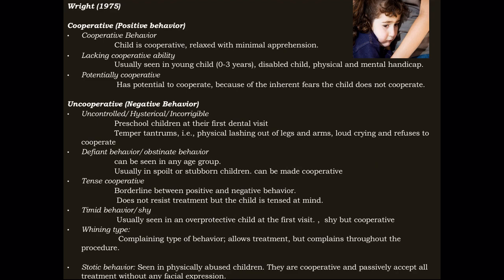Next is Wright's classification, given in 1975. Wright divided behavior into two types: positive behavior as cooperative, and negative as uncooperative. Cooperative behavior was further divided into cooperative, lacking cooperative ability, and potentially cooperative. Uncooperative can be uncontrolled, hysterical, or incorrigible; defiant or obstinate; tense cooperative; timid or shy; winning type; and stoic behavior. Some of these behaviors overlap with Lambshire's classification.